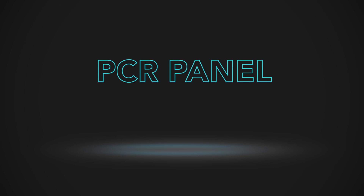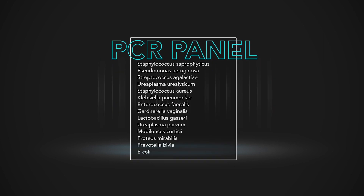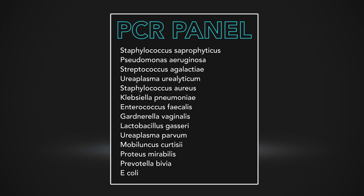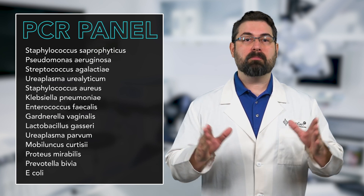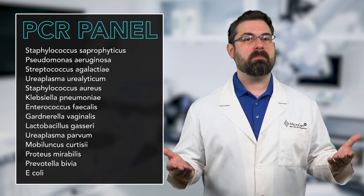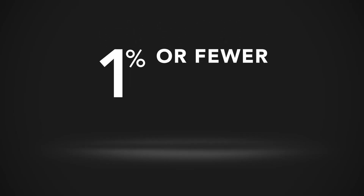PCR compares the DNA in a sample against a panel of microbial species which are believed to be common pathogens in that area of infection. These panels are limited to a predetermined list of species, which represent 1% or fewer of all known microbes. If you're only using PCR, you may be missing out on important diagnostic information.